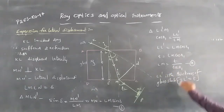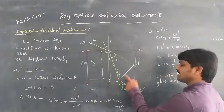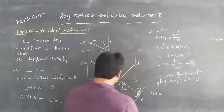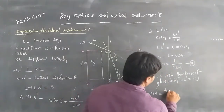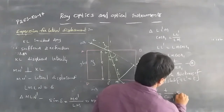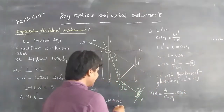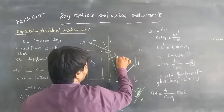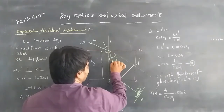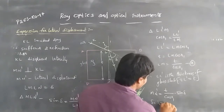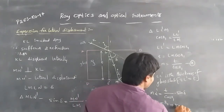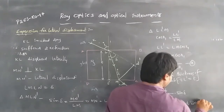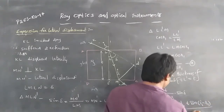Substituting equation 2 into equation 1, MN dash equals LM·sin delta, and LM equals T/cosR1. So MN dash equals (T/cosR1)·sin delta. The angle of deviation delta equals I1 minus R1. Therefore, MN dash equals T·sin(I1 − R1) / cosR1.